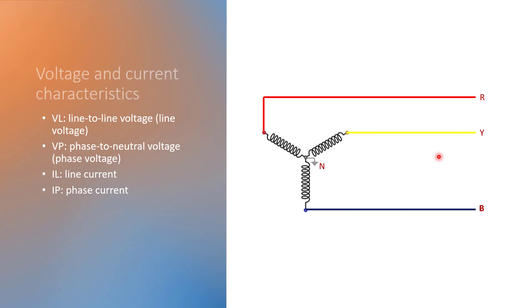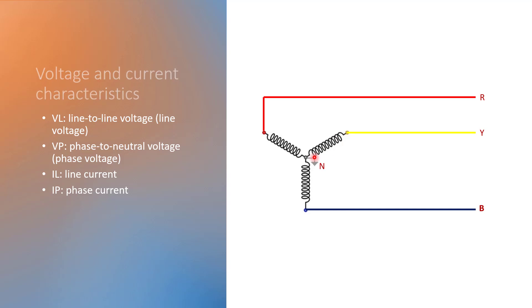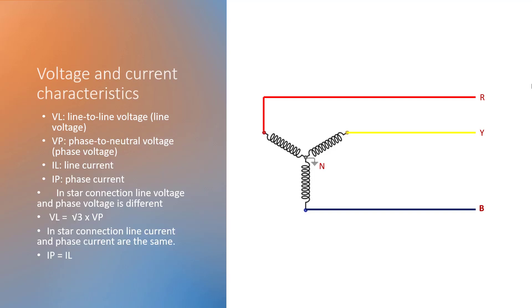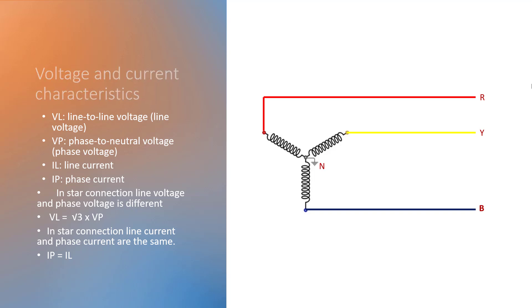IL is line current — the current flowing through one line, such as R line, Y line, or B line. IP is phase current — the current flowing through the phase impedance, which is in the form of a coil. In star connection, line voltage and phase voltage are different: VL equals root 3 times VP. If we want two voltage levels — single-phase and three-phase — we use star connection. In terms of current, in star connection, line current and phase current are the same: IP equals IL. So in star connection, VL equals root 3 times VP, and phase current equals line current.